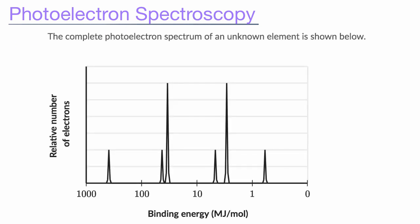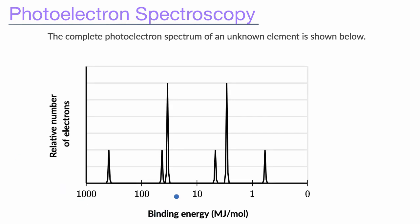And so what you'll often see, and you might see something like this on an exam, is a photoelectron spectrum that looks something like this. And so the first question is, well, what's even going on? How is this generated?